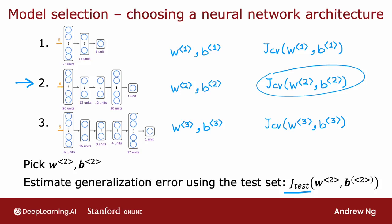It's considered best practice in machine learning that if you have to make decisions about your model—such as fitting parameters or choosing the model architecture, like neural network architecture or degree of polynomial—you make all those decisions using only your training set and cross-validation set, and do not look at the test set at all while you're still making decisions.